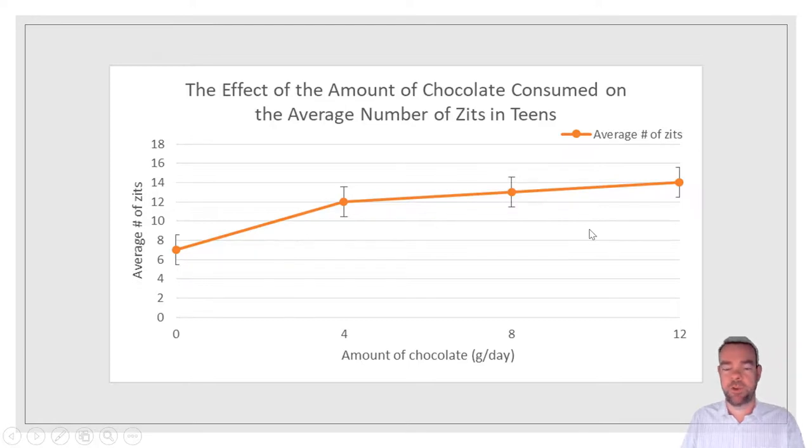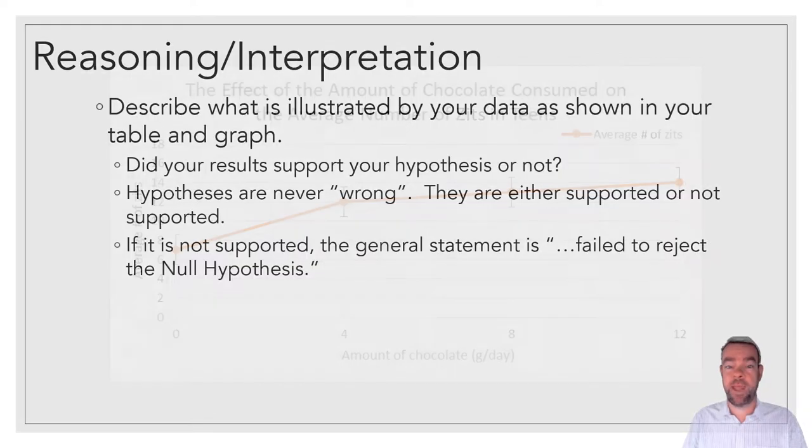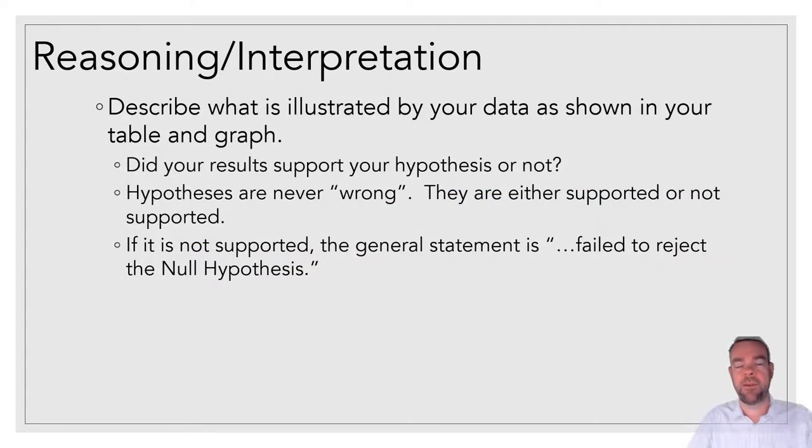Whereas my 4, 8, and 12 groups, they all are up here. I can see that they increase, but I look and I see that these bars overlap. And that's really the key you're looking for. If the bars overlap, you cannot say that those are different. Because my 4 group could be up as high as nearly 14, and my 8 group could be down below 12. So those overlap. I can't say they're different. But it looks like my 0 grams a day is different. So what that tells me, then, is that if people have 0 chocolate, then they have fewer zits. So that proves my hypothesis, right? Well, okay. I'm going to say it supports my hypothesis. Scientists don't like the word prove. It sounds a little too concrete. So my results suggest they support my hypothesis that chocolate causes acne.